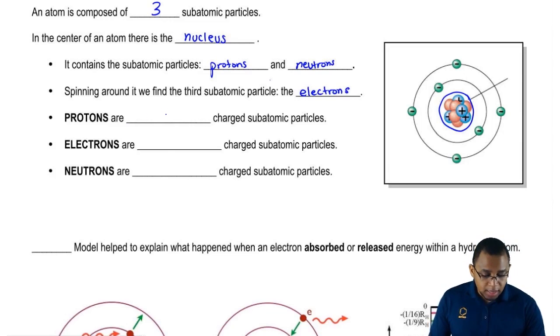The protons are positively charged. The electrons are negatively charged, and the neutrons have no charge, so they're non-charged subatomic particles.